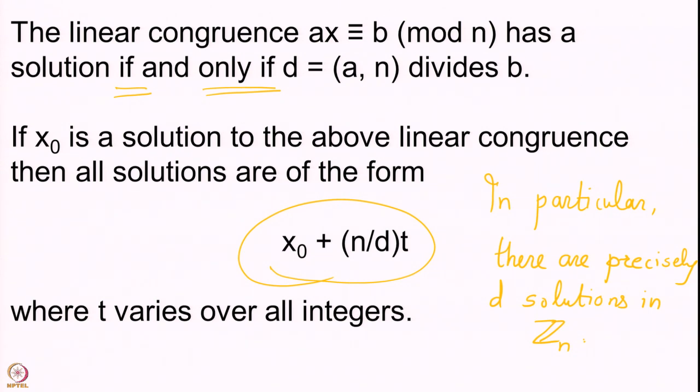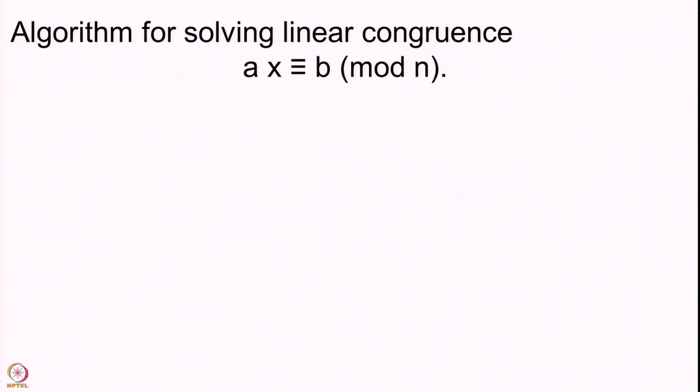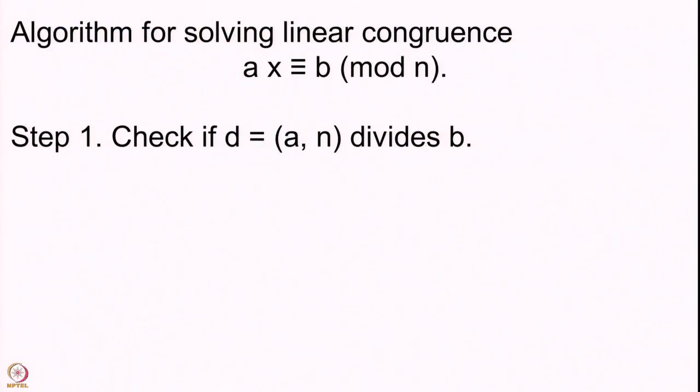Once this is understood, we wanted to know whether there is an algorithm for solving linear congruences, and there is indeed an algorithm we saw in the last lecture. What we want to do is solve the congruence ax congruent to b modulo n. Given a, b, and n, the very basic step is to check whether the GCD of a and n divides b. If the GCD does not divide b then there is no solution and we are done.